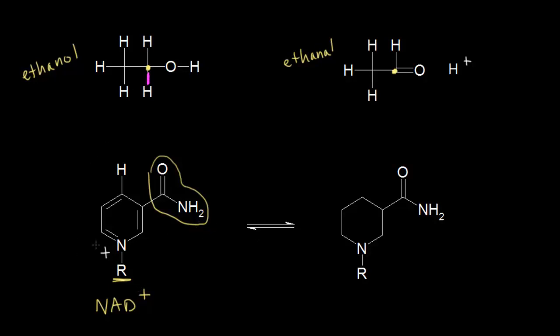Since ethanol is oxidized, NAD+ must be reduced. Reduction means gaining of electrons, so NAD+ is going to gain those electrons in magenta from ethanol. If we think about a possible mechanism: if I took these electrons between the oxygen and the hydrogen and moved them in here, that would form our double bond between the carbon and the oxygen. But there would be too many bonds to this carbon, so the electrons in magenta are going to move to this carbon down here on NAD+ — to this carbon.